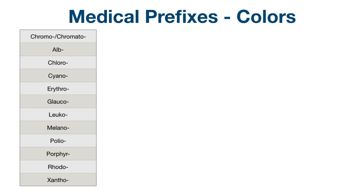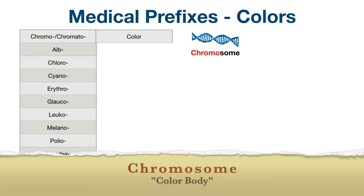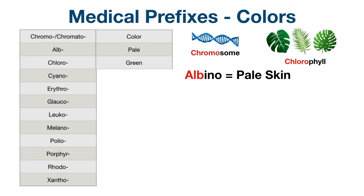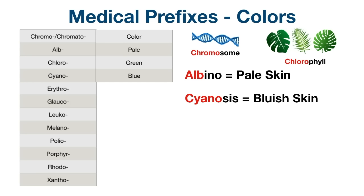Prefixes can also be used to describe color. The general prefix for color is chromo or chromato — think of chromosome, meaning colored body, named for the colorful dyes used to stain them in research. The prefix alb refers to pale; think of albino, a person or animal with the congenital absence of pigment, causing them to appear pale or white. Chloro means green — think of chlorophyll, the green pigment in plants. Cyano refers to blue; for example, cyanosis is a bluish discoloration of the skin, typically from poor circulation or low oxygen levels in the blood.